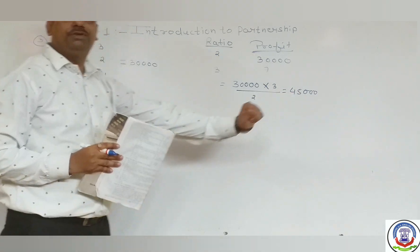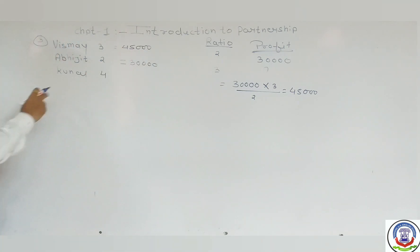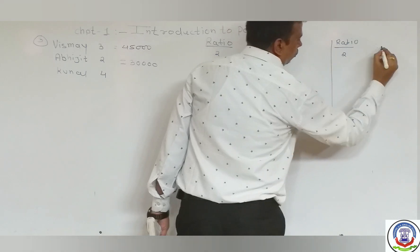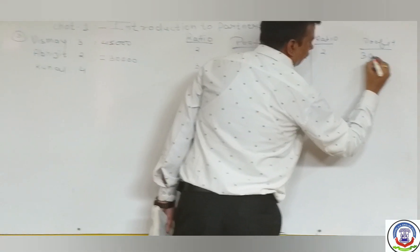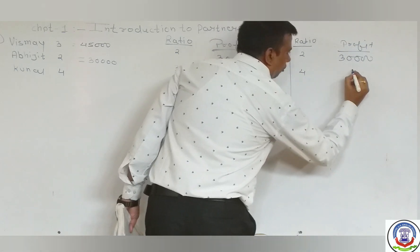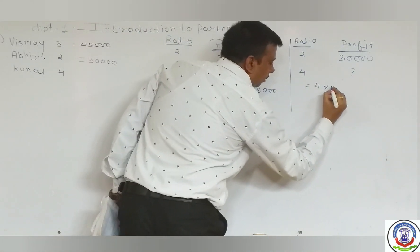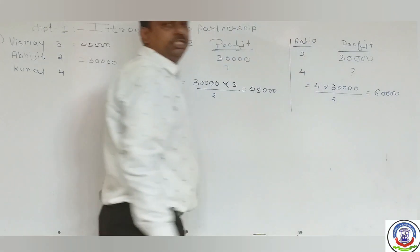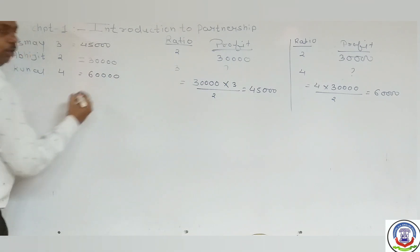So 45,000 is the profit of the first partner Wismer. For Kunal, same calculation: when ratio is 2, profit is rupees 30,000; when ratio is 4 (Kunal's ratio), cross multiplication gives 4 multiplied by 30,000 divided by 2, which equals rupees 60,000. So Kunal's profit is rupees 60,000.